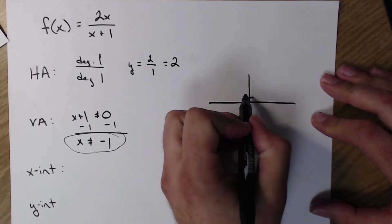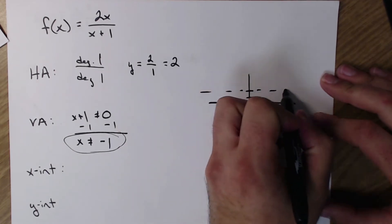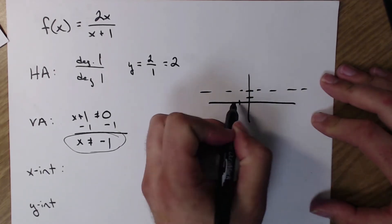Rough sketch here. Horizontal is here at 2. The vertical is over at negative 1.